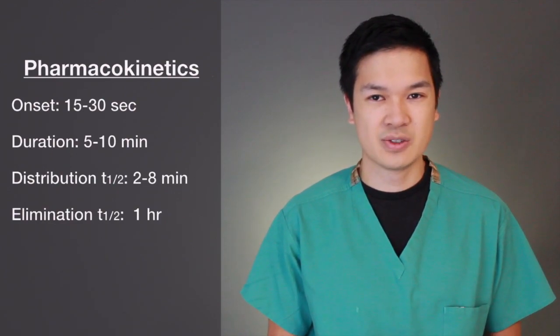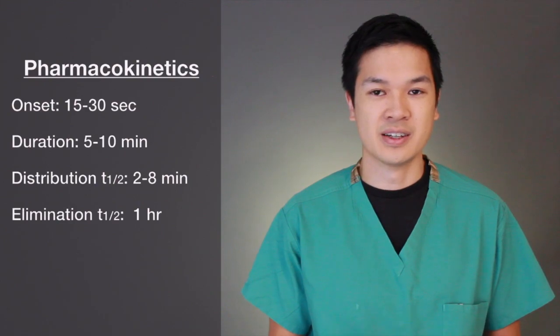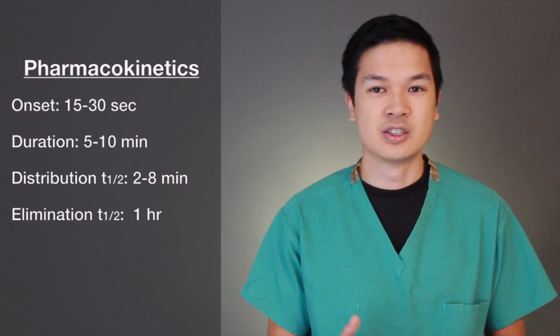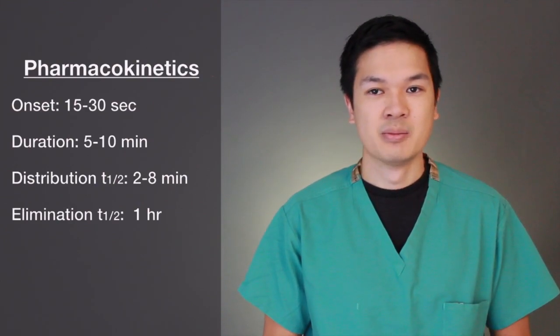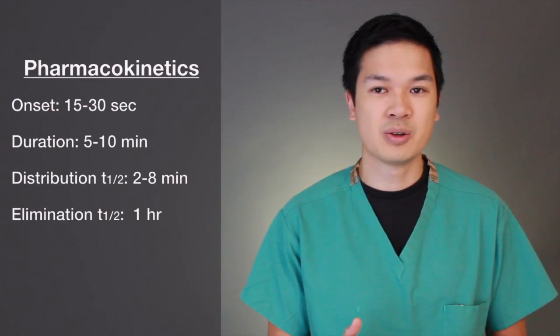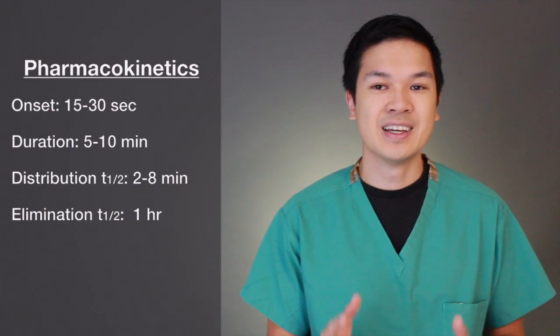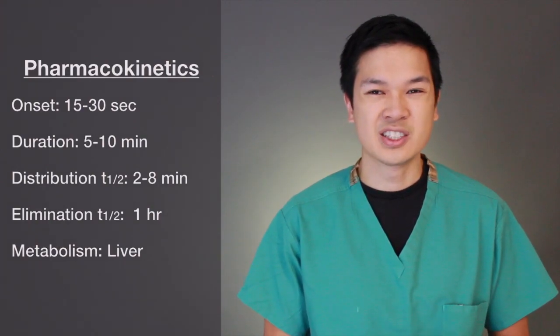The amount of time it takes for the drug to be eliminated from the body is termed the elimination half-time. Propofol's elimination half-time is 1 hour, and it's broken down primarily by the liver into inactive metabolites, which are excreted by the kidneys. It's also believed that Propofol is metabolized in the lungs and kidneys as well.